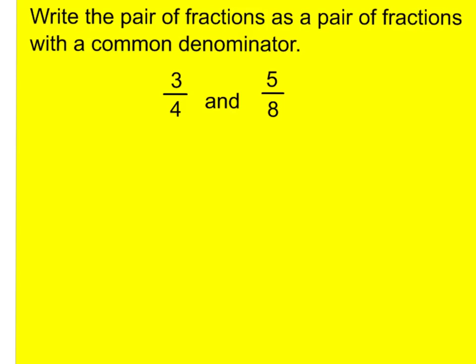So let's take a look at three-fourths and five-eighths. I see that my denominators are different — this one has four, this one has eight. Let's find one that's common. I'm going to list my multiples of four: 4, 8, 12, 16. Now let's list our multiples of eight. Eight. I can stop right away — you always want to find the least common multiple whenever you find equivalent fractions.